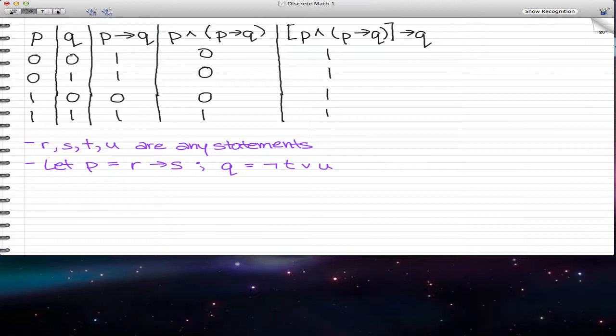And let's say that r, s, t, u are any statements. So what we know here is, we know that this statement is a tautology. So what we can do is, let p equal r implies s and let q equal negated t or u.